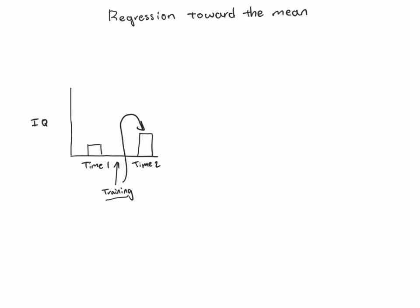In general, this issue of regression toward the mean has to do with the fact that people have a certain true value for whatever it is that we're measuring. In this case, they have some true underlying intelligence — some level of intelligence — and we try to get at that and measure it with an IQ test. So they end up with an IQ score, which we hope accurately reflects their true intelligence.